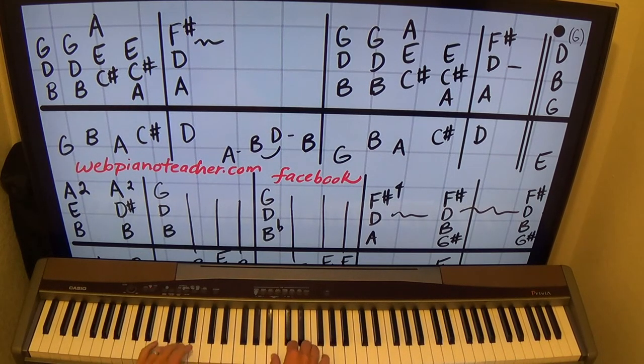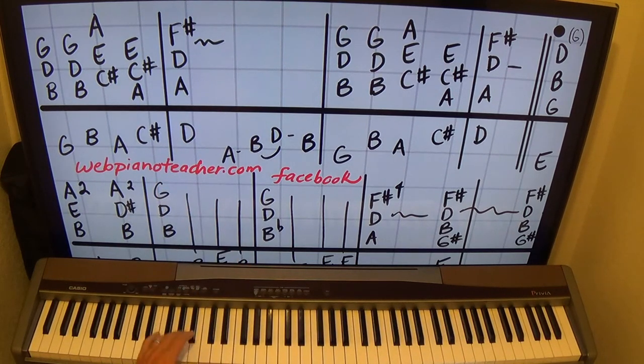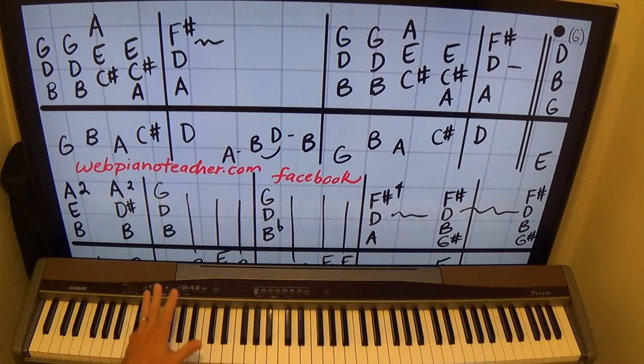So the left hand's going to go D, B, A, C sharp, D. So I'll do single notes. Until I get to the D, I'll do an octave, which means two Ds on the thumb and pinky.